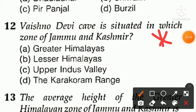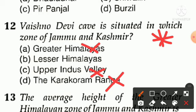Question number twelve — an important question: Vaishno Devi cave is situated in which zone or which Himalayan range? Option A is Greater Himalaya, option B is Lesser Himalaya, option C is Upper Indus Valley, option D is Karakoram. It is not in Karakoram, not in Upper Indus Valley, not in Greater Himalaya. Vaishno Devi Cave falls in option B — Lesser Himalaya. You have to remember this.